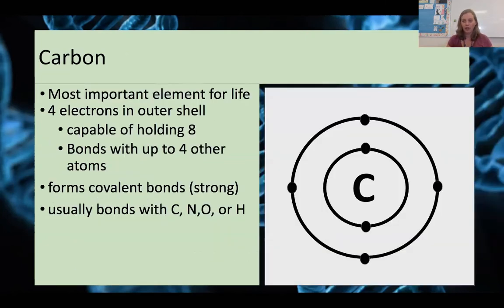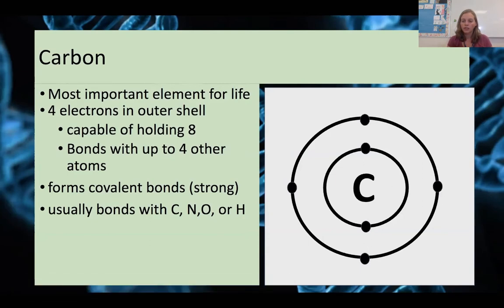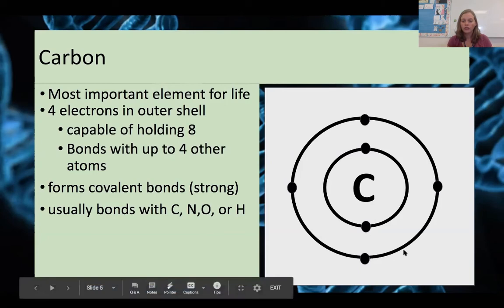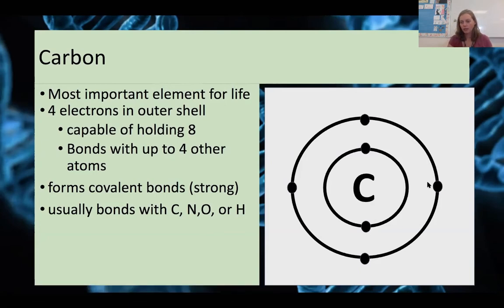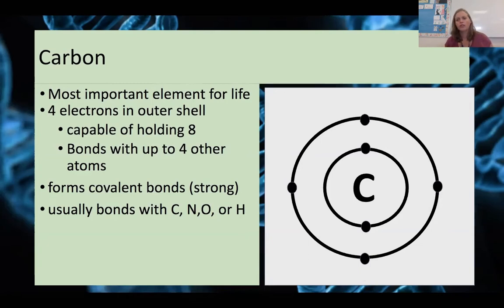The most important element out of our six is carbon. Carbon has six electrons, with only four electrons in its outer shell, but it can hold eight. That gives carbon the opportunity to bond with other elements in any direction, so it can make all kinds of shapes, and the different atoms it bonds with can have all kinds of functions. It's an incredibly important molecule for life just based on the variety of shapes you can get from it.